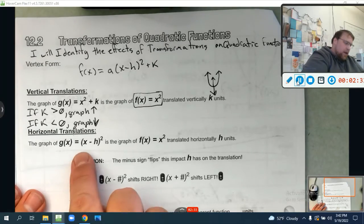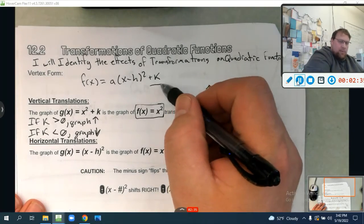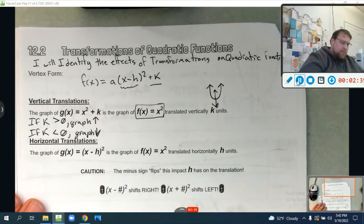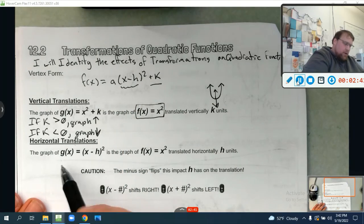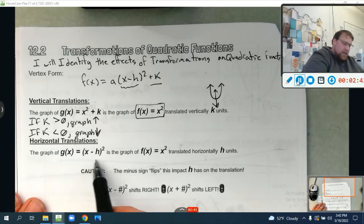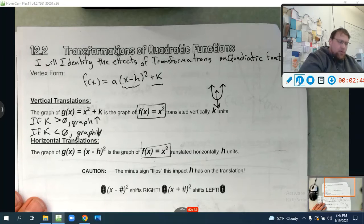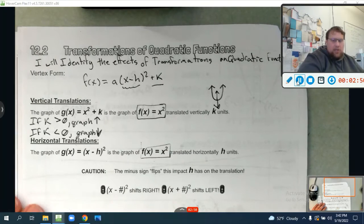Now we want to talk about this inside. So that's just this outside portion we're talking about. Now I want to talk about the (x minus h) squared portion of it. So the graph of g(x) equals (x minus h) squared is again the graph of the parent function f(x) equals x squared, but translated horizontally h units.